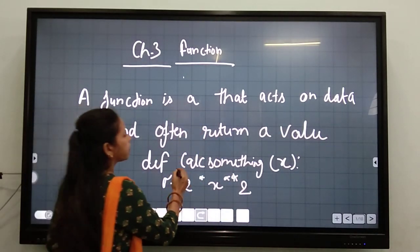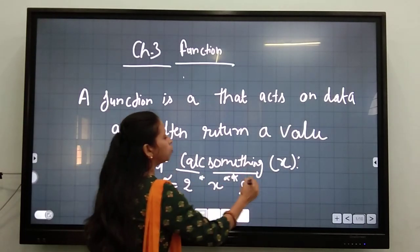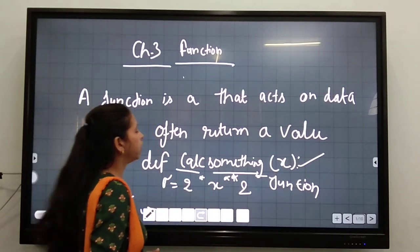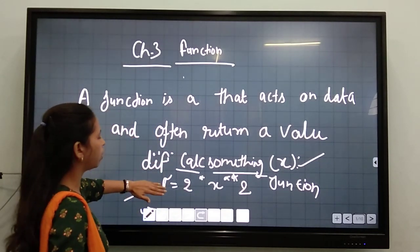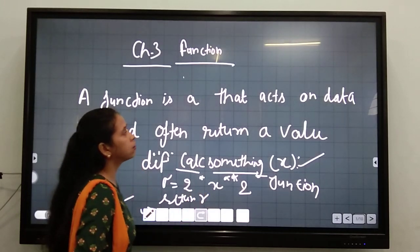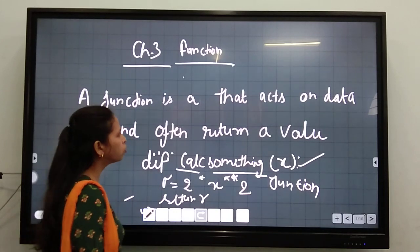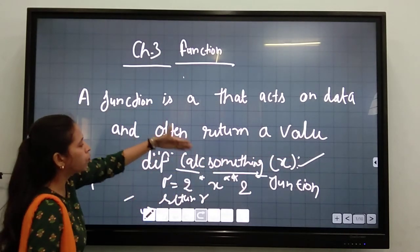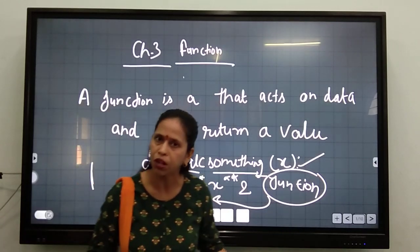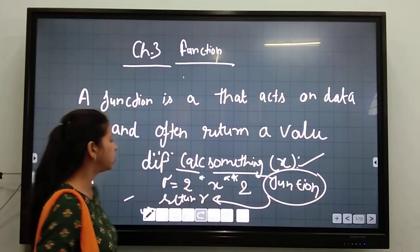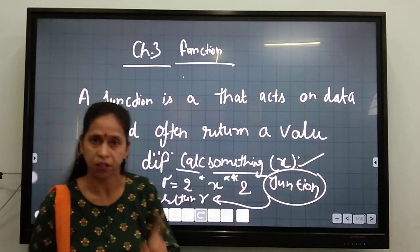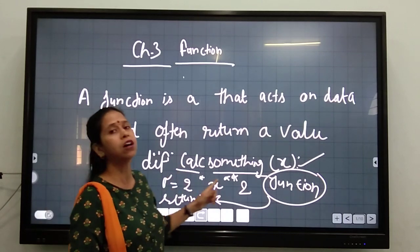Let's take an example — calc_something. This calc_something is a kind of function where we put a variable x. This function will return a value: R = 2 * x * x, so it will return R. A function must return a value. If it is not giving a return value, it is not a function. In the case of a function, we use return instead of print.